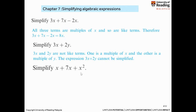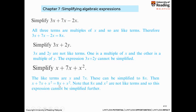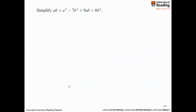x plus 7x plus x squared: the first two terms, x plus 7x, are like terms, whereas x squared is not a like term with them. For the first term x, there is no number in front, so the coefficient is actually 1. So you take 1 plus 7 to get 8x, and the x squared you just leave it there.